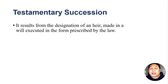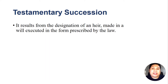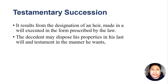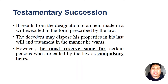Testamentary succession results from the designation of an heir made in a will executed in the form prescribed by law. A will is a formal document prescribed by law wherein the deceased would name an heir who would inherit or succeed his estate. The deceased may dispose of his properties in his last will and testament in the manner he wants; however, he must reserve some for certain persons called compulsory heirs.